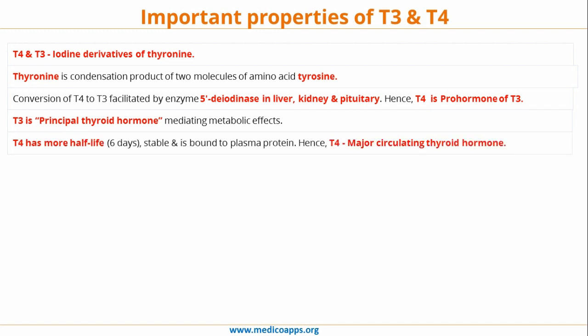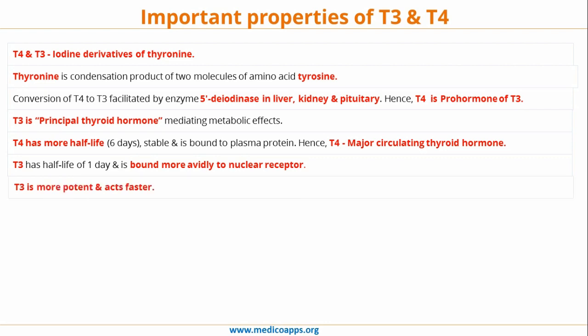T4 has a longer half-life compared to T3 — the half-life of T4 is 6 days. It is more stable and bound to plasma proteins, making T4 the major circulating thyroid hormone in the body. T3, on the other hand, has a half-life of only one day, is bound more avidly to nuclear receptors, and is more potent and acts faster. The thyroid only secretes 20% of T3 directly; the remaining 80% is peripherally converted from T4.